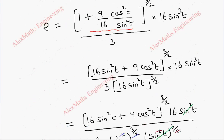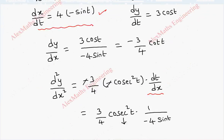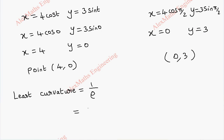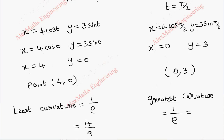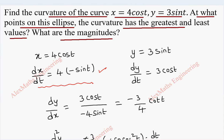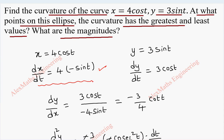The curvature κ = 1/ρ. Since least ρ = 9/4, the least curvature is 4/9 at point (4, 0). Since greatest ρ = 16/3, the greatest curvature is 3/16 at point (0, 3). We have found the curvature points and the greatest and least curvature values with their magnitudes.